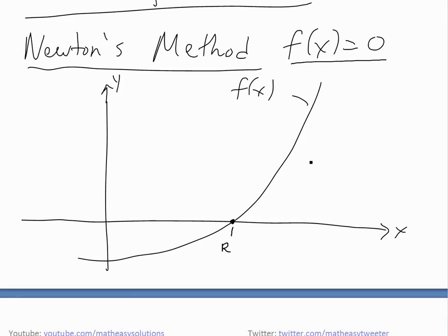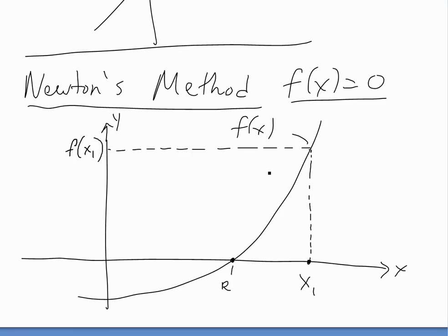What Newton's method states is you first pick an approximation point x1 — a random one that the calculator picks, or sometimes you have to choose if the equation is complex and the calculator can't determine where it's closer to zero. So you pick this point x1, and from it you have the function value f of x1. Newton's method then determines the derivative at this point, and if you draw the tangent line all the way down, it should be closer to the root than your starting point x1.